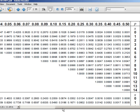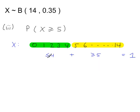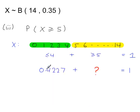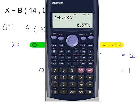Looking up less than or equal to 4 in the tables at P = 0.35 gives 0.4227. So the probability that X is greater than or equal to 5 equals 1 minus 0.4227, which is 0.5773.